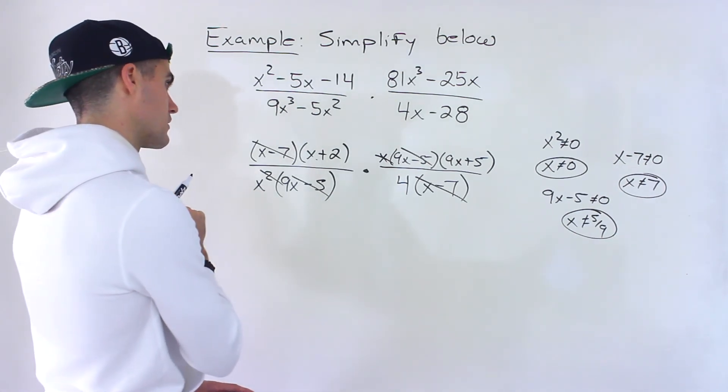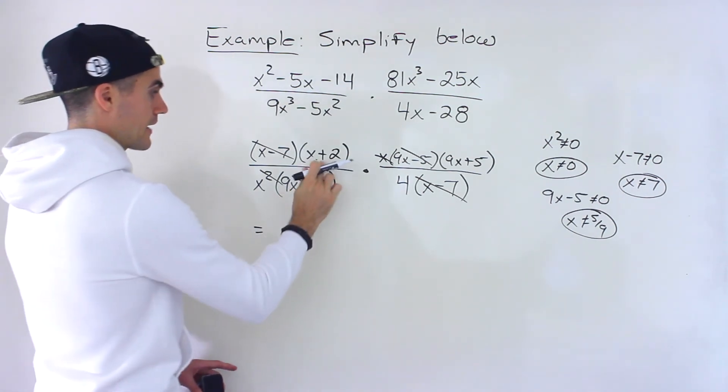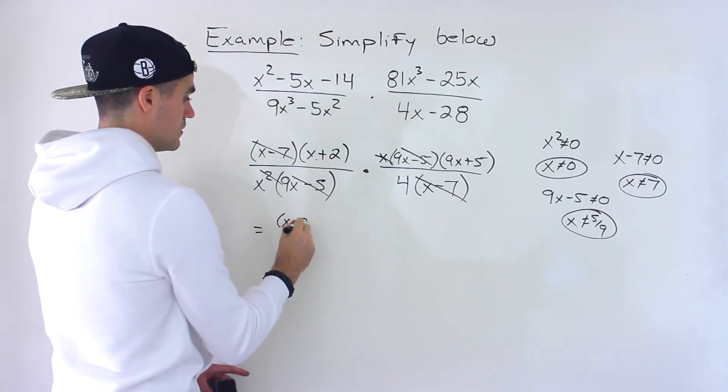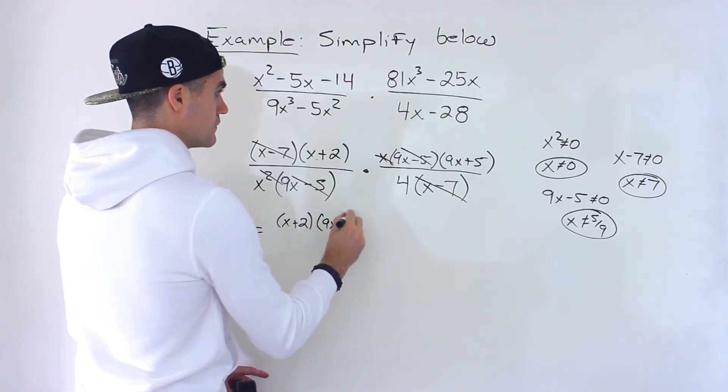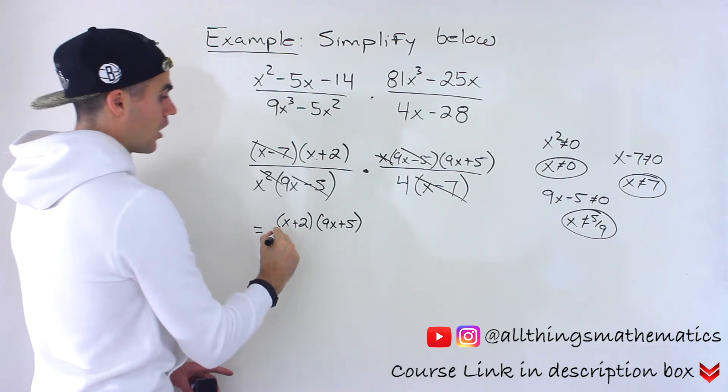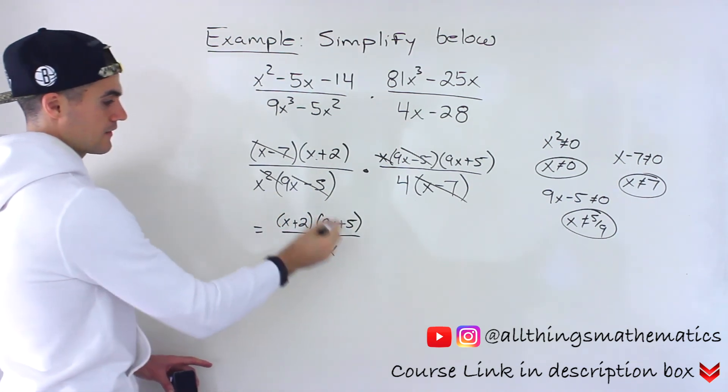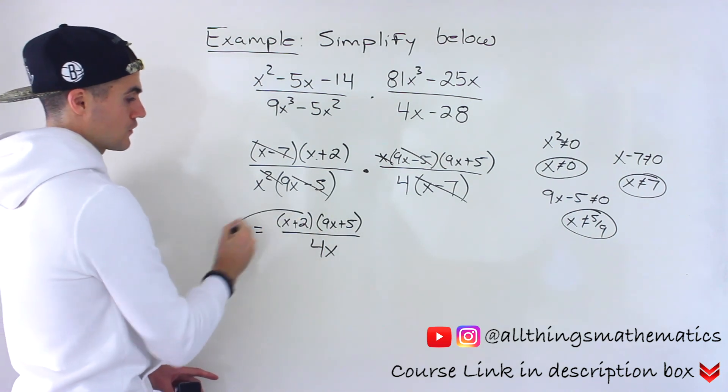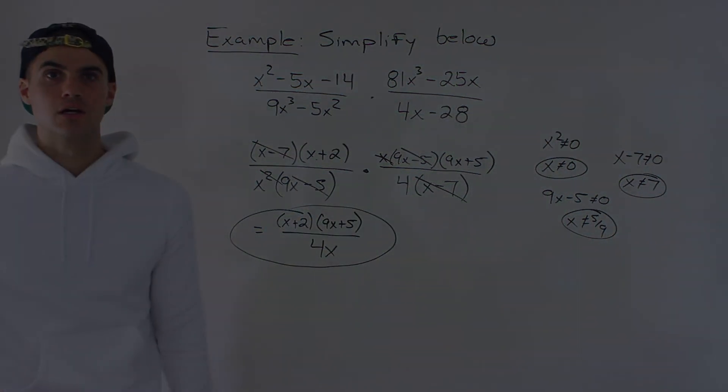And then from here, nothing else simplifies. So we would be left with x plus 2 times 9x plus 5, these two brackets, multiplied by or all over 4 times x. Like that. And then that doesn't simplify any further. So that's the simplified expression. Those are the restrictions.